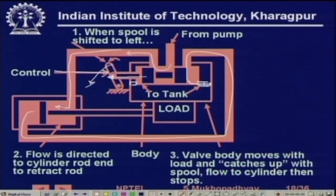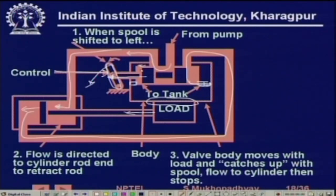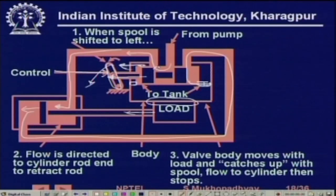Interesting thing is where is the feedback? The interesting thing is that the load is connected to the body. If you pull the spool this side, the cylinder will move this side, and the load will also move this side — and the load is connected to the body. So the body will also move this side. The spool is connected to the lever and the body is connected to the load. The movement of the body is actually like a movement of the spool in the other direction, because the opening is actually by relative motion. So if the body also moves in this direction, again this valve will close.